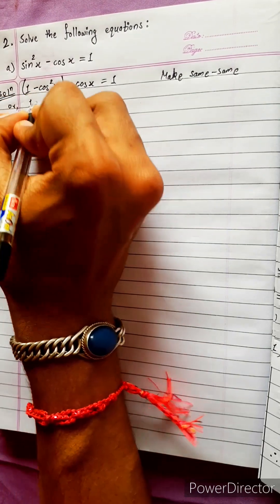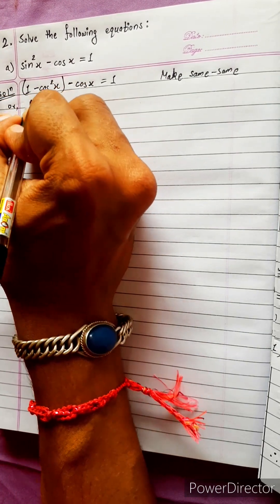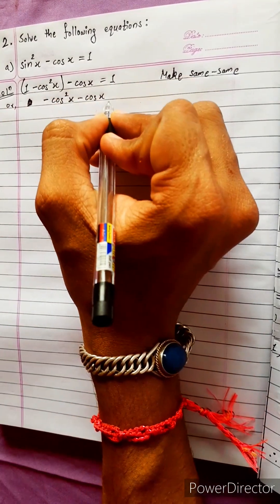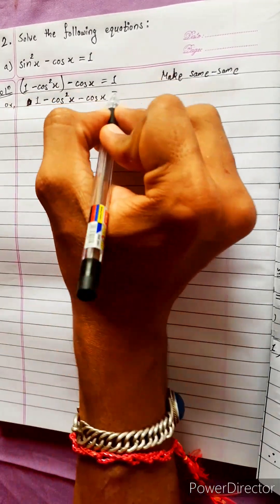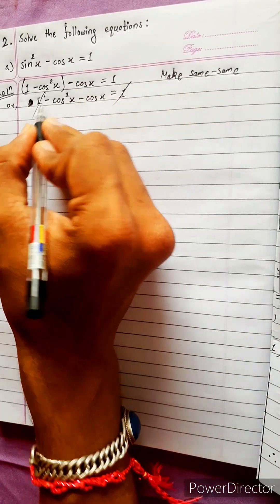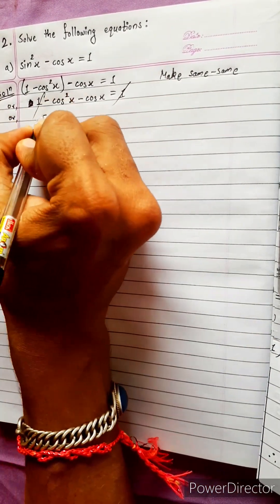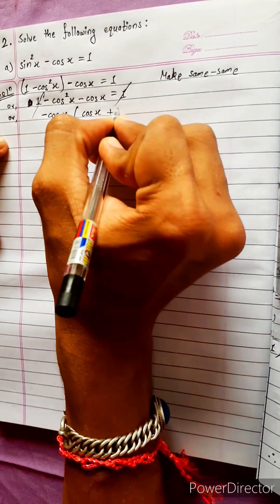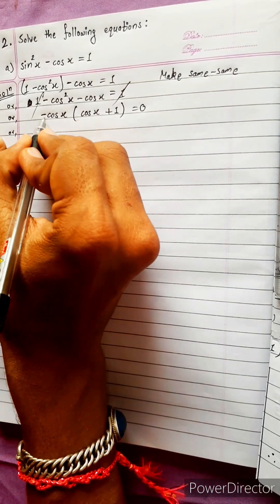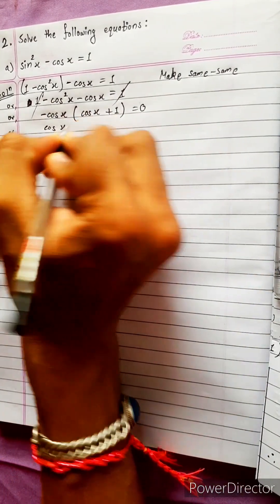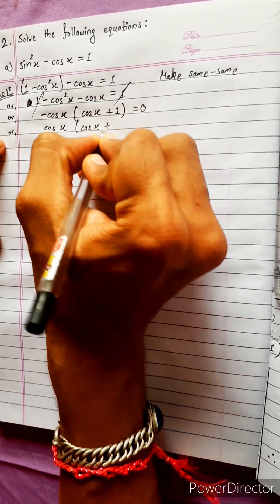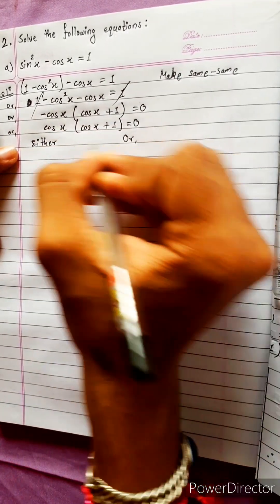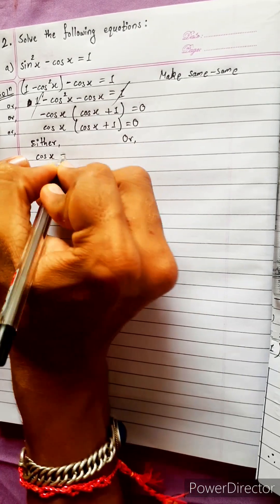This is the first step. Now simplify: minus cos²x minus cos x. Similarly, cos x equals 0.